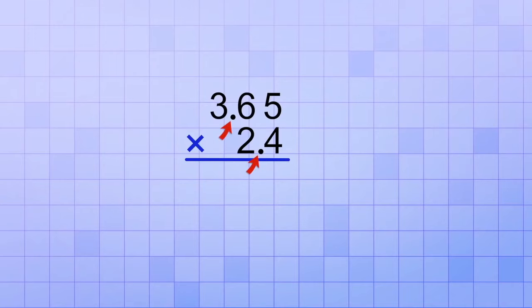So, by ignoring the decimal points, what we were really doing is mentally shifting the decimal points to the right. We shifted the top decimal point two places to the right, and we shifted the bottom decimal point one place to the right.